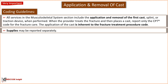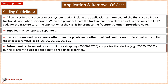All services in the musculoskeletal system section include the application and removal of the first cast, splint, or traction device when performed. When the provider treats the fracture and then places a cast, report only the CPT code for the fracture care — the application of the cast is inherent to the fracture treatment procedure code. Supplies may be reported separately. If a cast is removed by someone other than the physician who applied it, report a cast removal code. Subsequent replacement of cast, splint, strapping, or traction device during or after the global period may be reported separately.